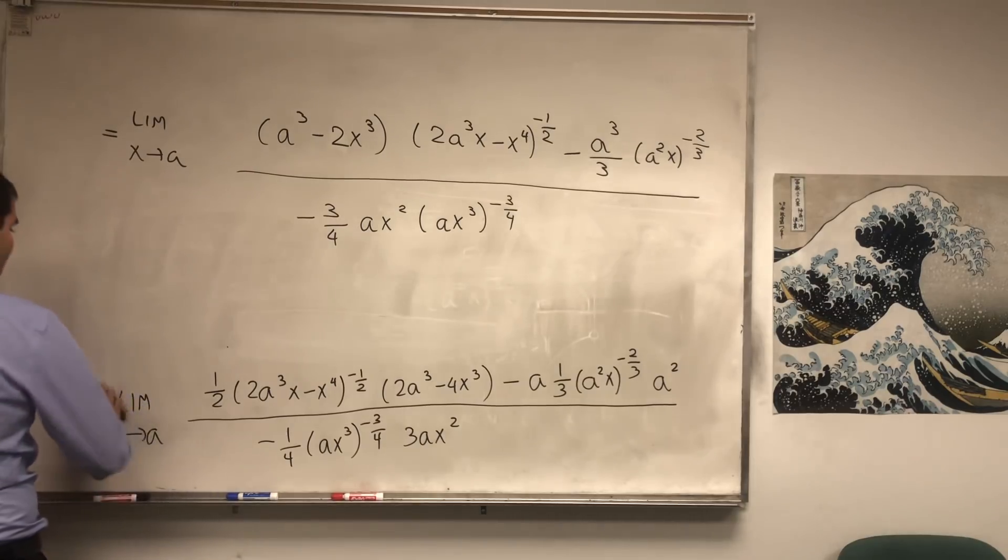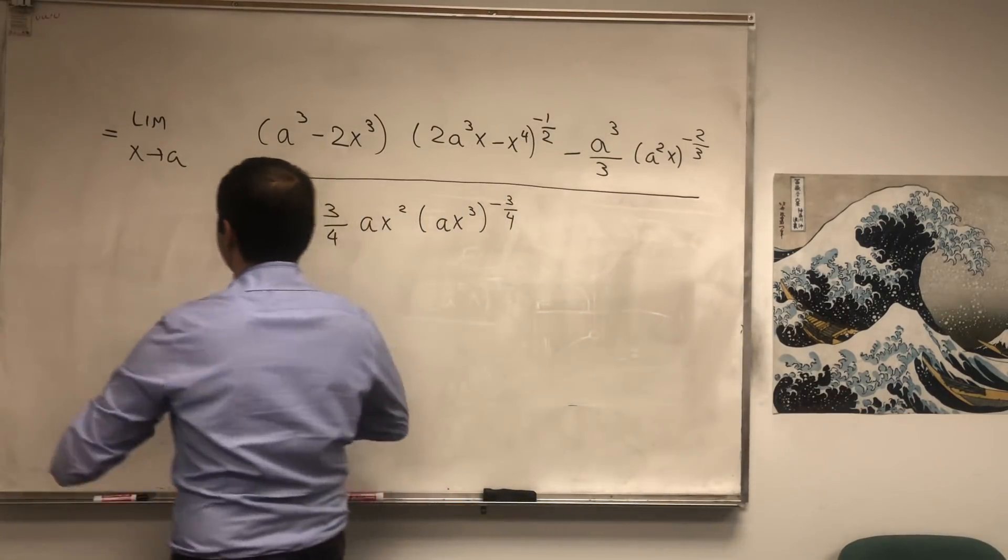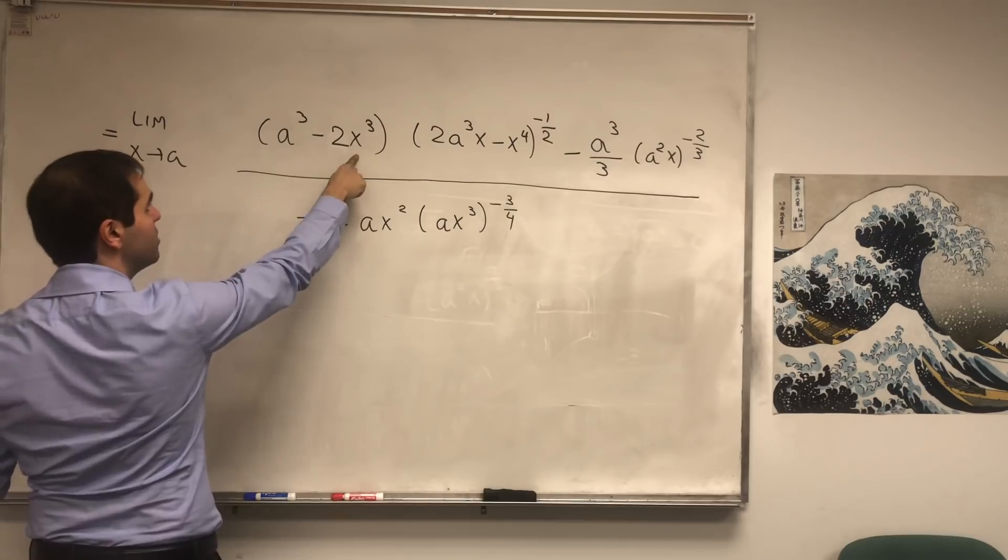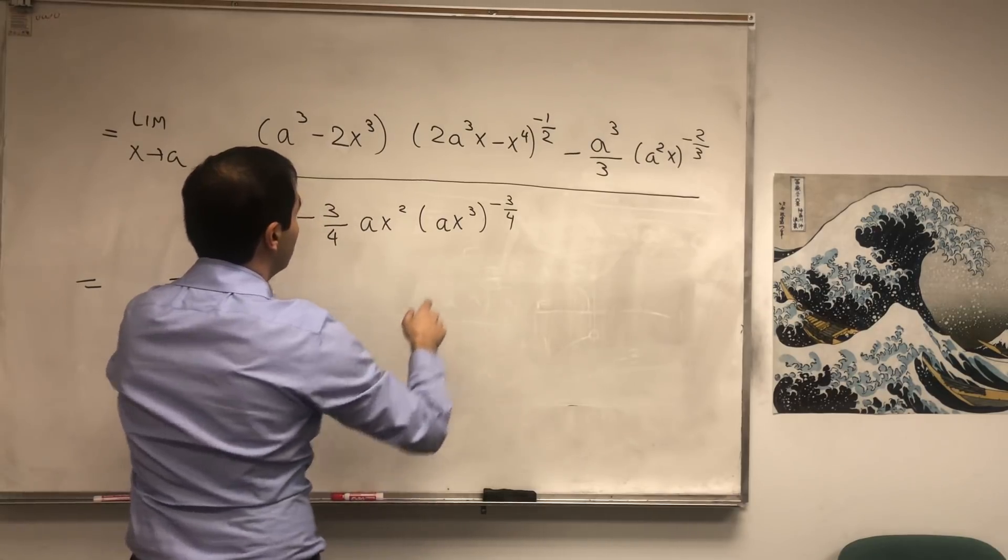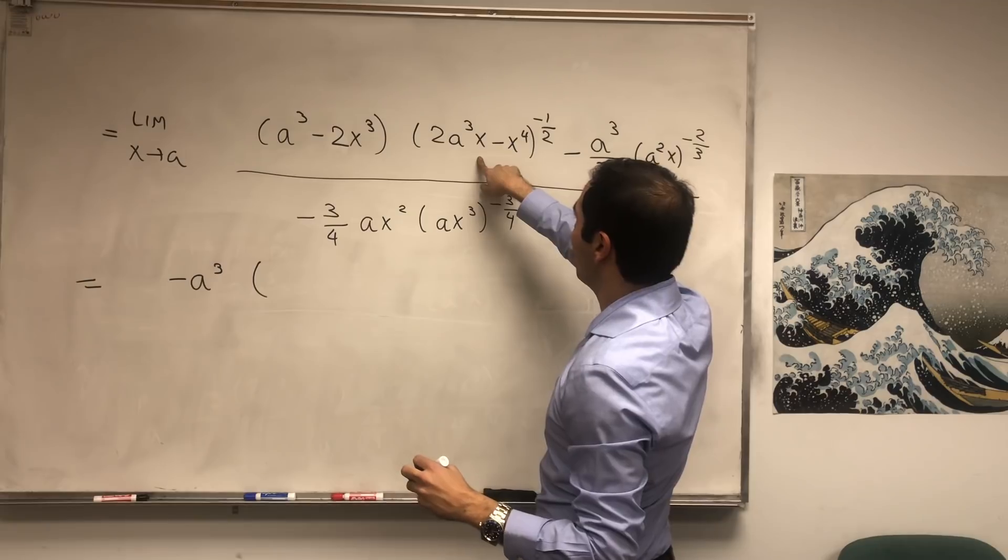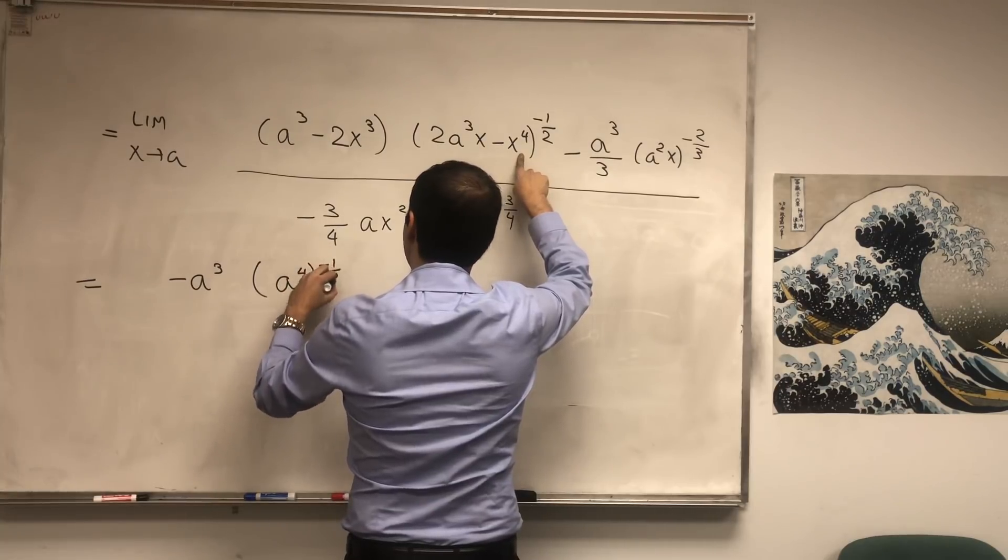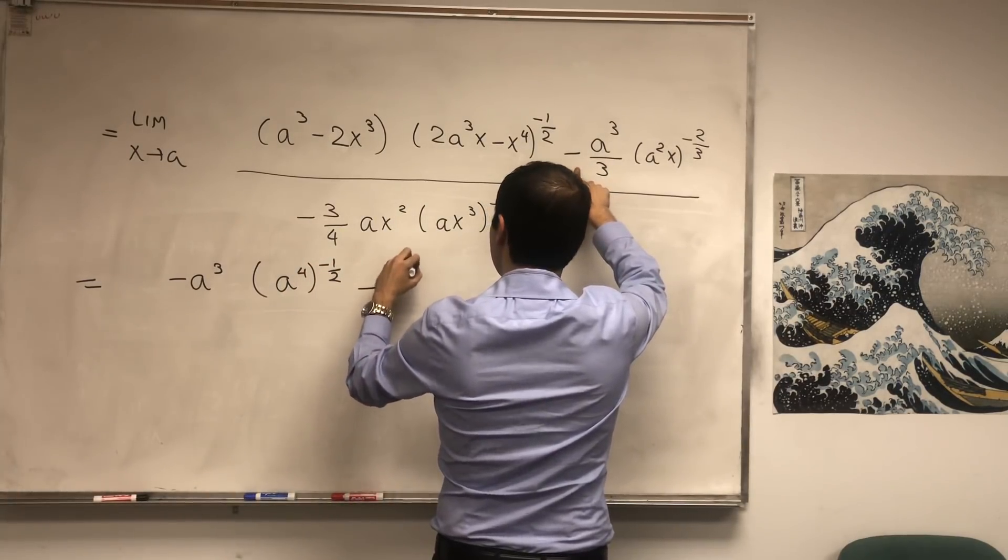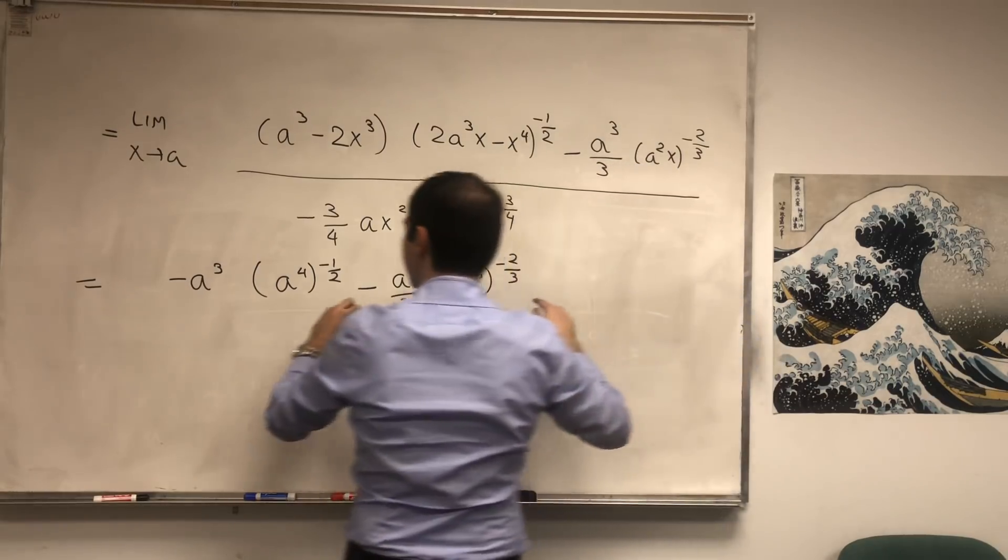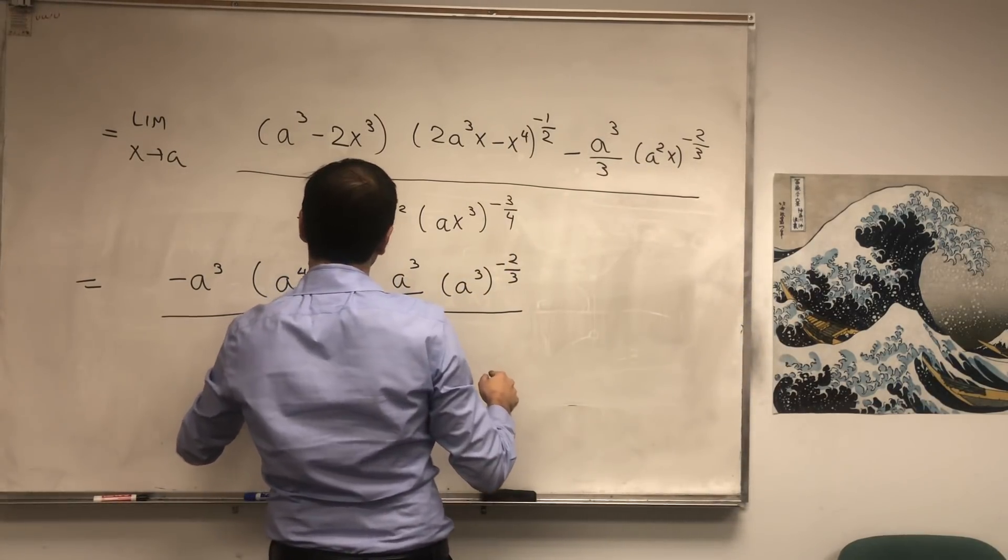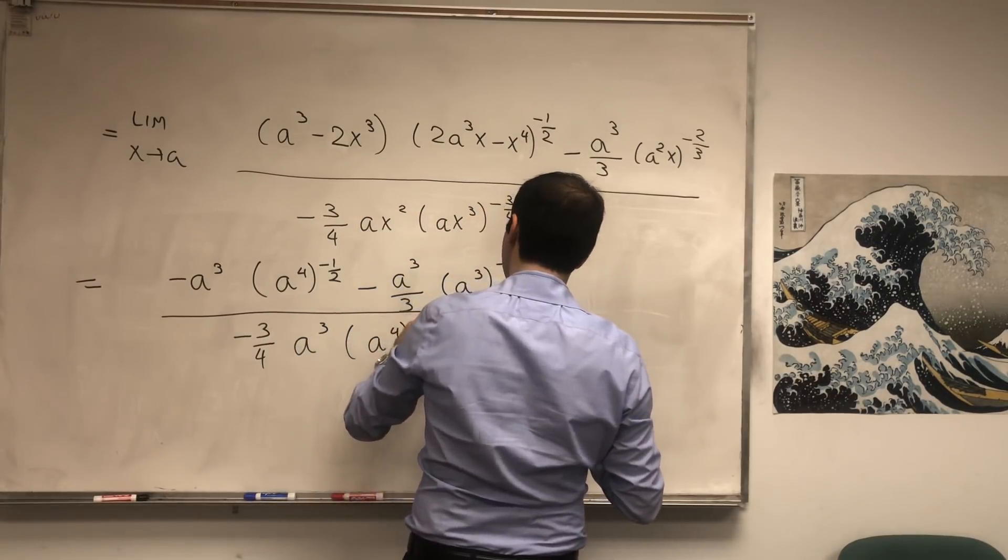Okay, now let's plug everything in. So then we get a³ minus 2a³, that becomes minus a³. Now, 2a³ times a, so a⁴ minus a⁴, that becomes zero, so to the minus one-half. Minus a³ over three times a² times a³ to the minus two-thirds, divided by minus three-quarters times a³ and then a⁴ to the minus three-quarters.